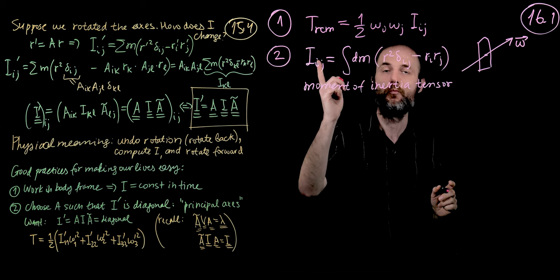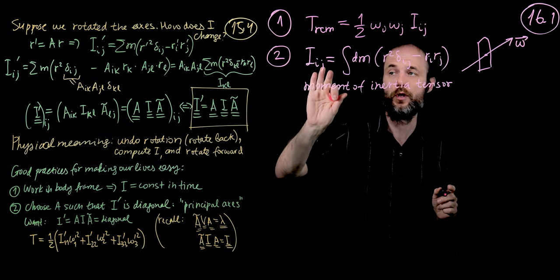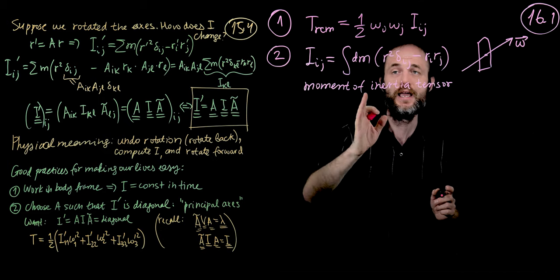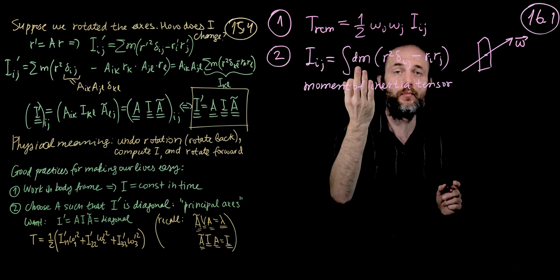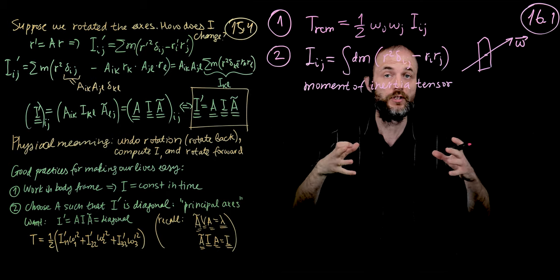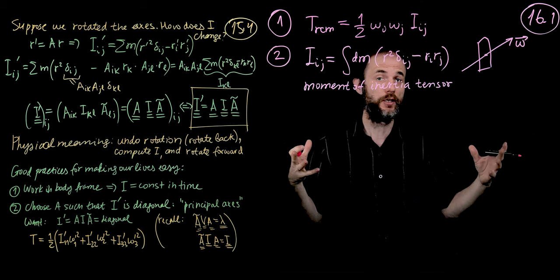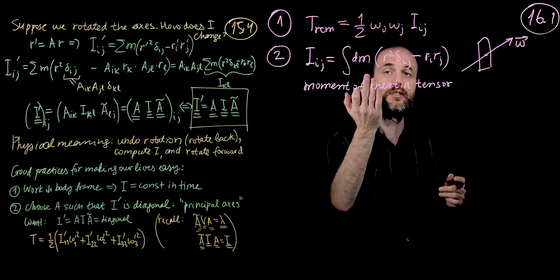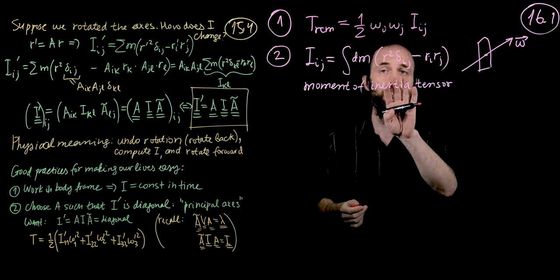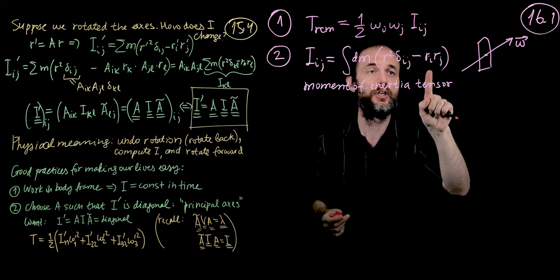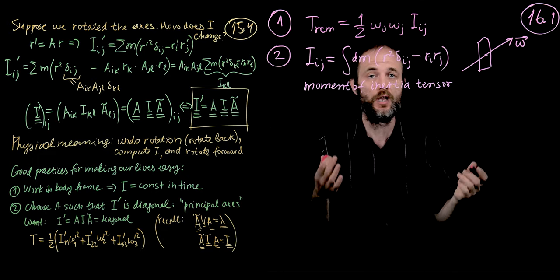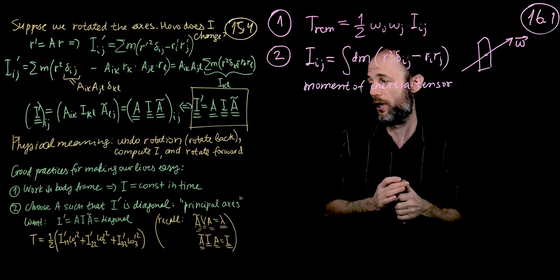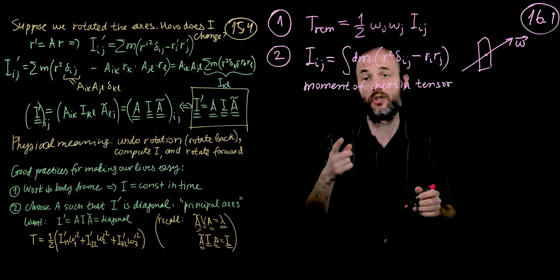The moment of inertia tensor I_ij is the sum over all the different pieces that the body is made of — dm, the mass of that piece, times r squared times delta_ij minus r_i r_j. That is our moment of inertia tensor.